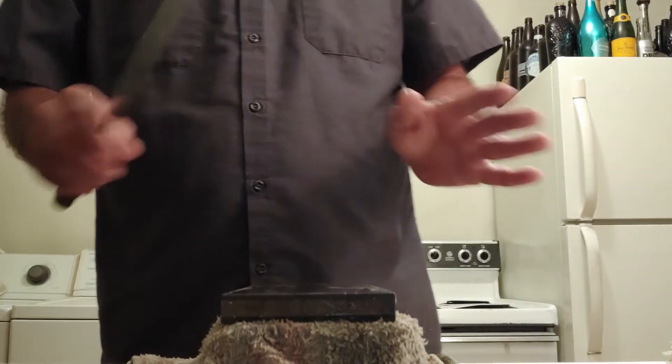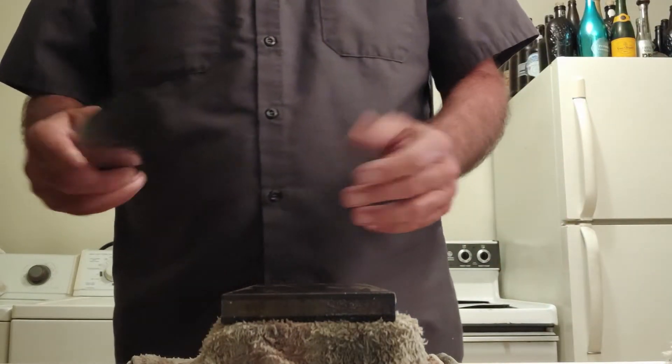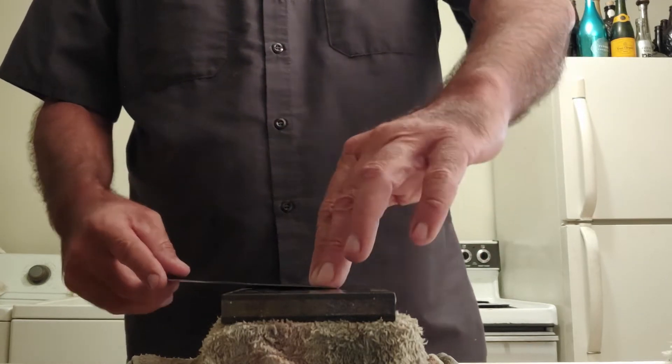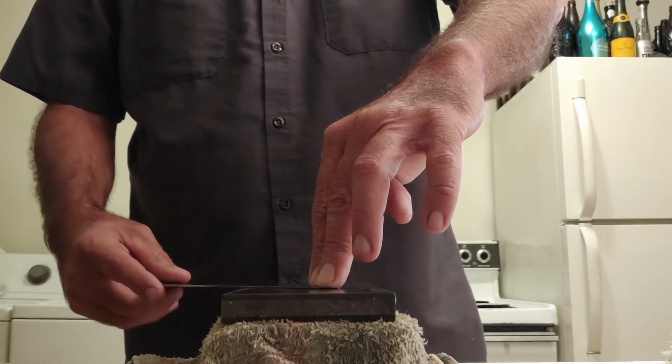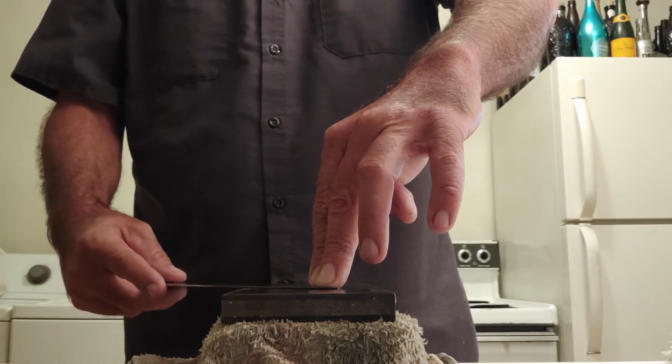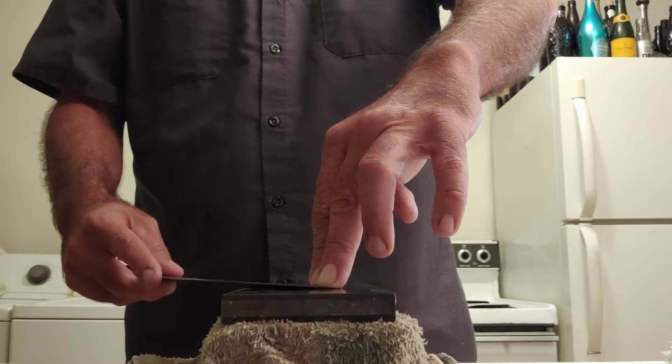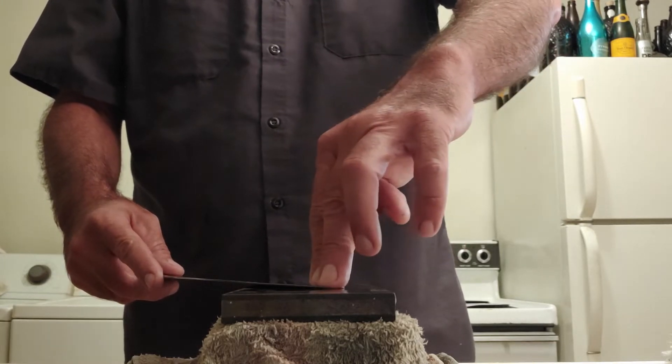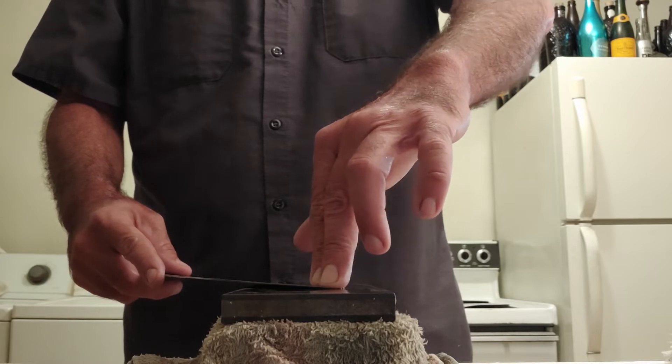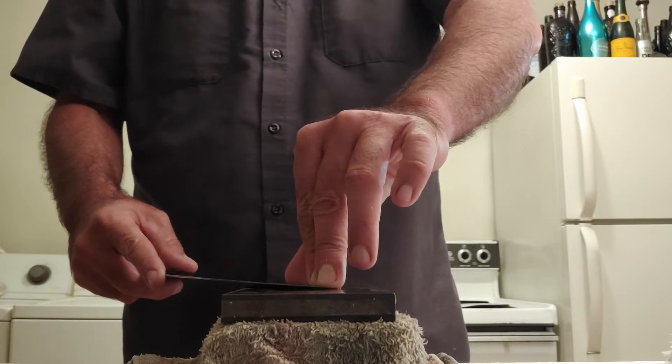Alright, so enough talking. Without further ado, the way to sharpen these is deceptively simple. And that is to find, lay the knife on your stone and raise it up just enough till the edge contacts the stone. And that is the angle of your bevel. And that is the angle that your knife could sharpen on.